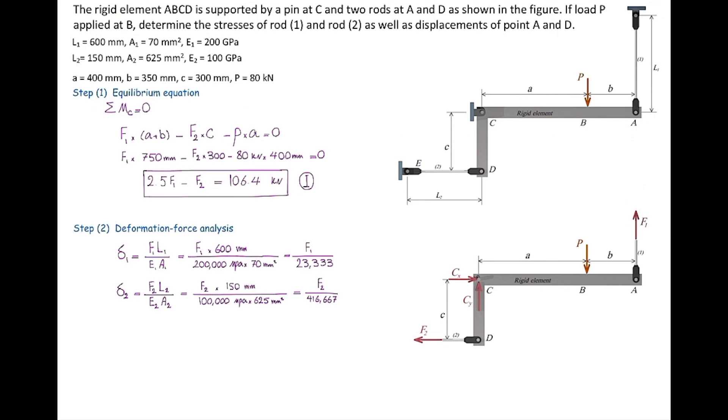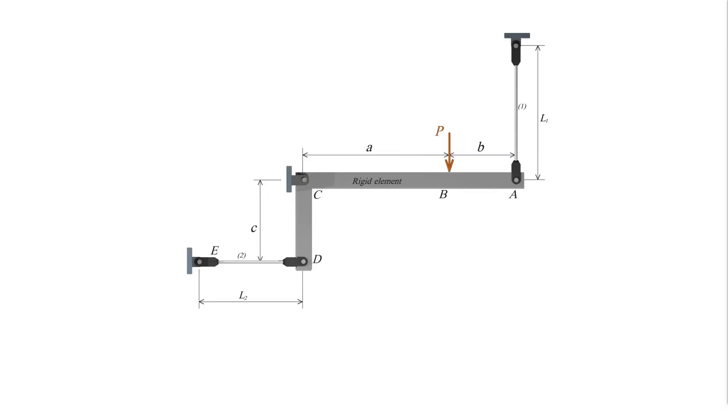Now we get to the critical part: how can I find a relationship between movements of rod 1 and rod 2? To establish such a relationship, we need to figure out how the element is moving and deforming. That L-shaped element is rigid, which means it's not bending—it can just tilt around the support at C. Based on that, I can imagine this is how the element would deform if subjected to external force P. Joint A is moving downward, causing a stretch in element 1, and joint D is moving left, compressing element 2.